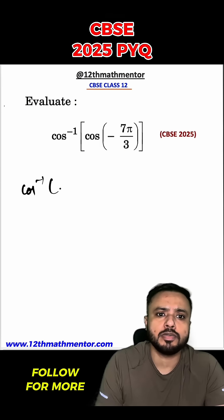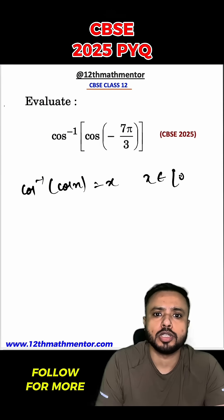To solve this question, first we have to understand that cos inverse cos x is equal to x when x belongs to 0 to pi.